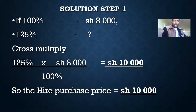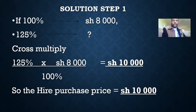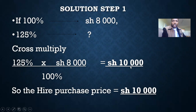When solving this problem, the 100% which is the cash price equals 8,000 shillings, and the hire purchase is 125%. We are supposed to cross multiply: 125% multiplied by 8,000 then divided by 100%. This gives us 10,000 shillings, which is the hire purchase price.